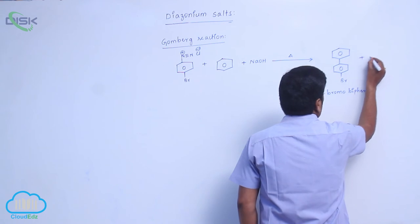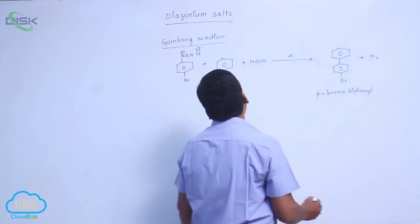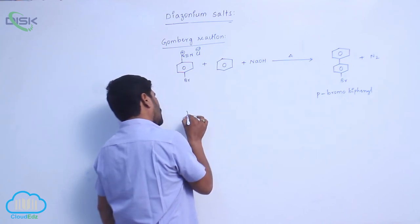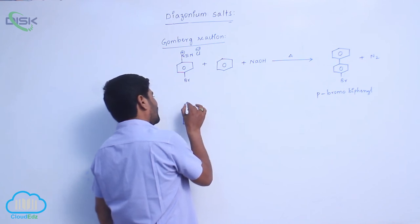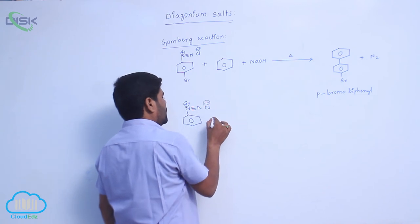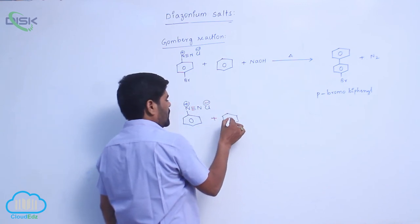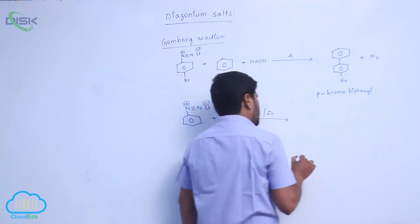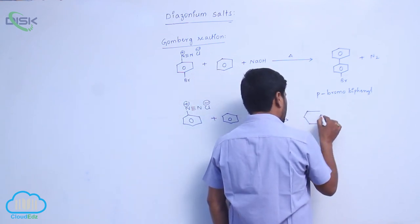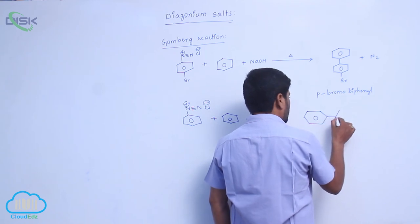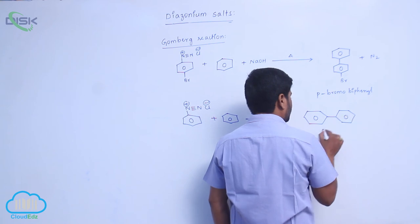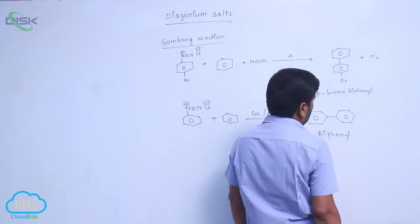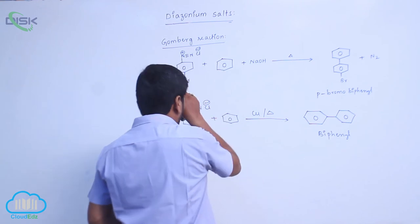Para-bromo biphenyl involves the loss of a molecule. When benzene diazonium chloride reacts with benzene in the presence of copper, it forms biphenyl. This particular reaction is known as the Gomberg reaction.